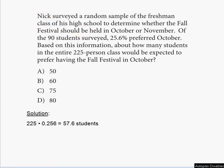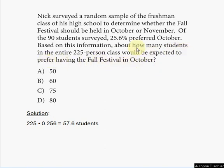Hello everyone, welcome to my free online tutorial for the new SAT math section. This is problem number four, practice test section four, calculator allowed, found in the new SAT official study guide. Nick surveyed a random sample of the freshman class of his high school to determine whether the fall festival should be held in October or November. Of the 90 students surveyed, 25.6% preferred October. Based on this information, about how many students in the entire 225-person class would be expected to prefer having the fall festival in October?